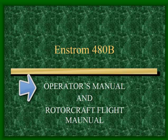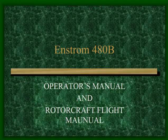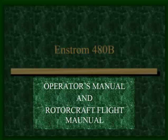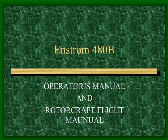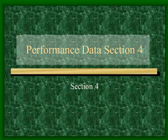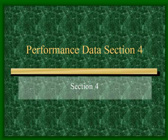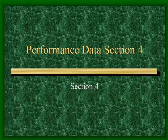The Enstrom manual is called the operator's manual and rotorcraft flight manual. People argue about the name — pilot's flight manual, POH, rotorcraft manual — but whatever helicopter you're flying, the name on the cover is what it is. For the Enstrom 480B, same thing: the performance data section is section 4. In your helicopter manuals, section 4 is always your performance section.